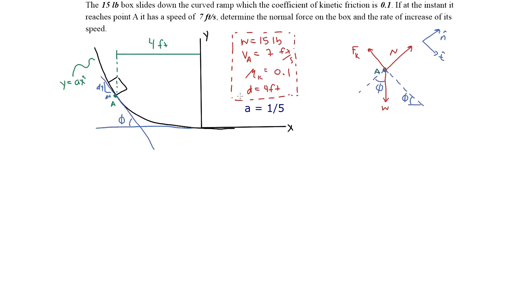The equation of the curve is y equals one-fifth x squared. By knowing that equation we can develop the derivative at this point, find the slope, and therefore find the angle at which the slope makes with the horizontal axis.